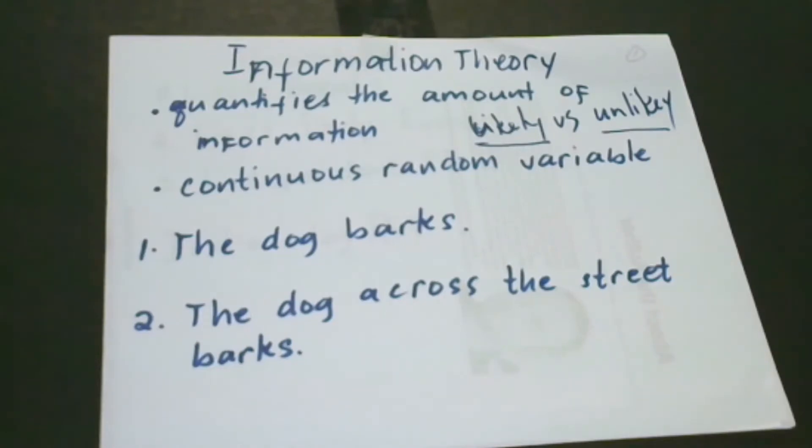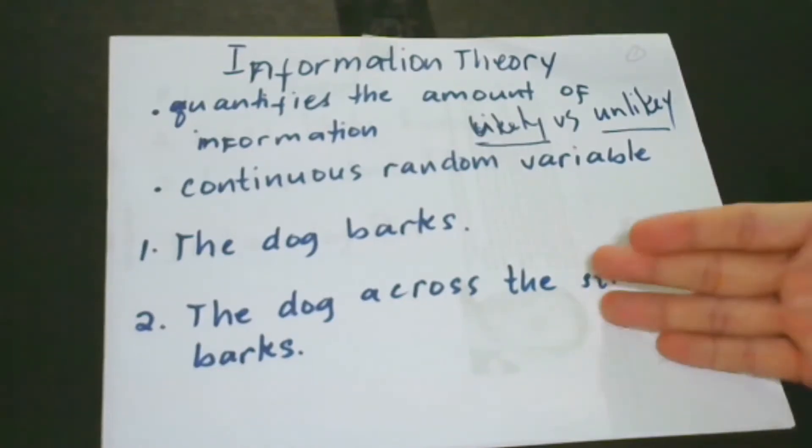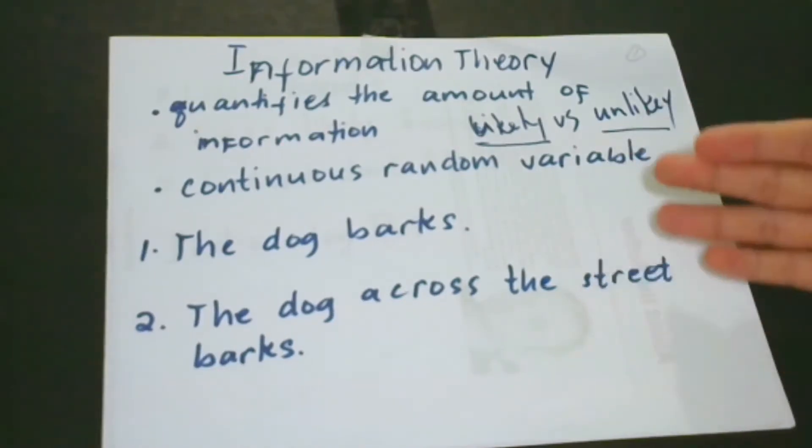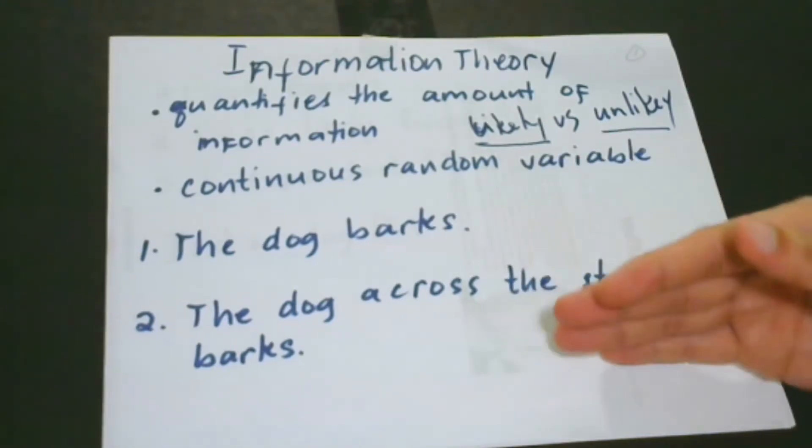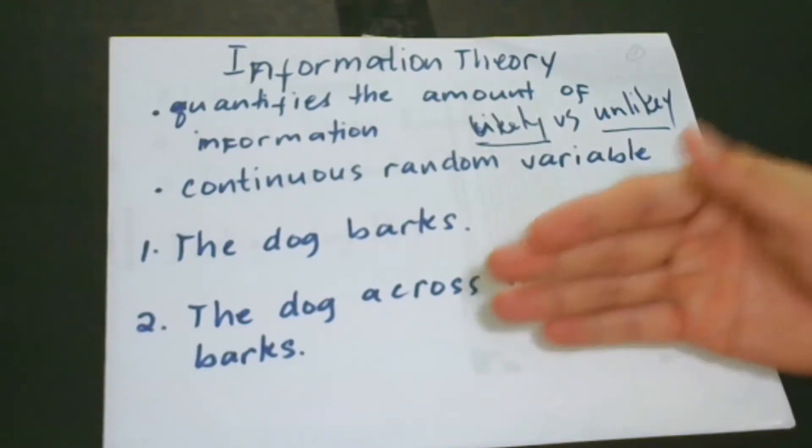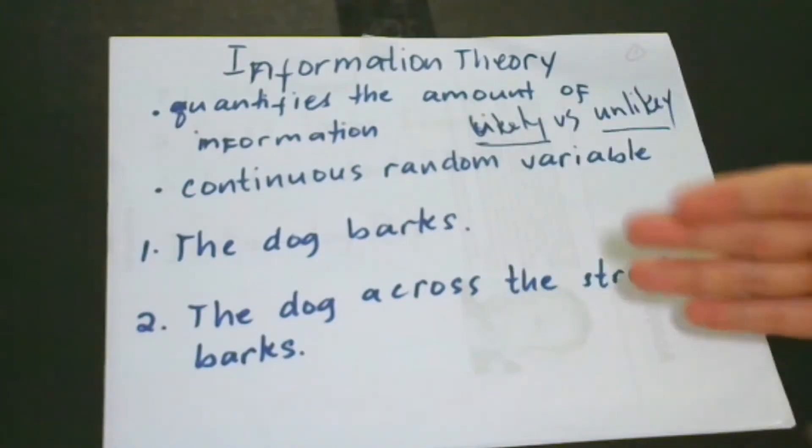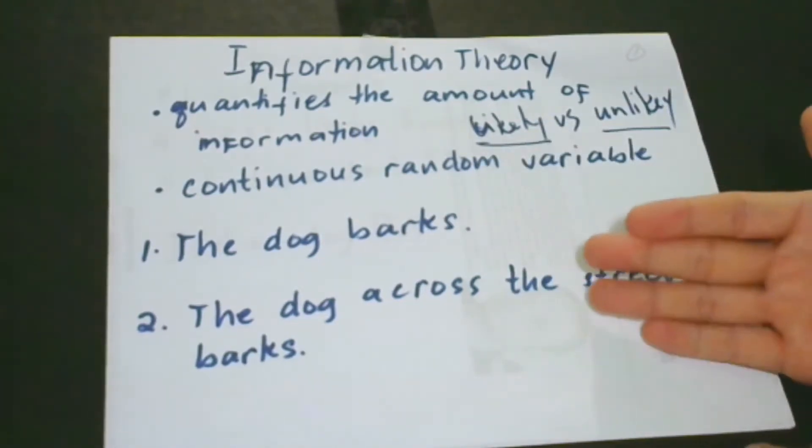So what is the meaning of this? For better understanding, let's have these two statements. So we have the first statement, the dog barks, and the second statement, the dog across the street barks. So which statement do you think contains more information?